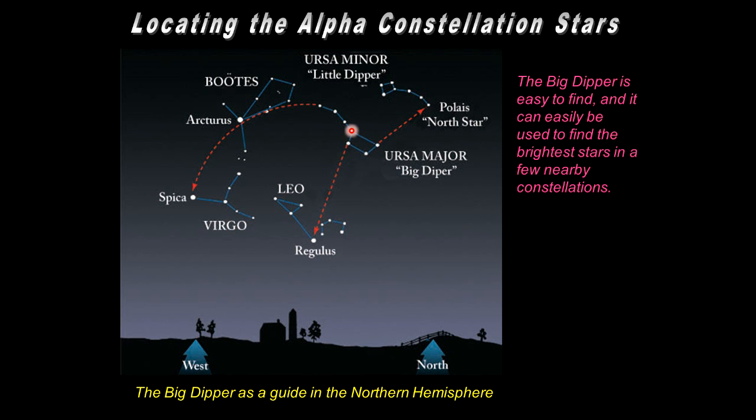And you can use it as a guide to discover the locations of a few of the other constellations. So for instance, if you follow the handle of the Big Dipper, arc to Arcturus, then you can speed on to Spica of Virgo, Arcturus being the alpha star of Boötes.